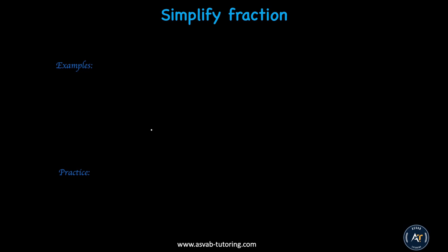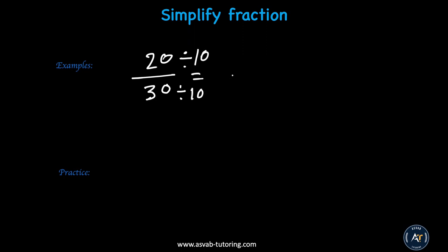Now we'll learn how to simplify fractions. Make sure you write every single step. Say I have 20 over 30. Simplifying a fraction means dividing the top and bottom by the same number. What common number can divide both 20 and 30? I found 10. So 20 divided by 10 is 2, and 30 divided by 10 is 3 — that gives you 2 thirds.